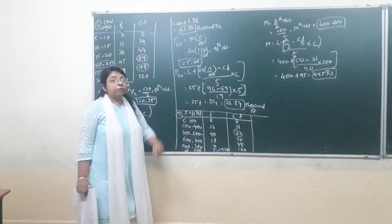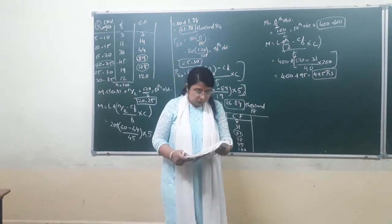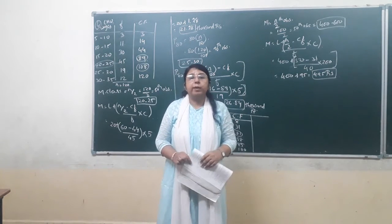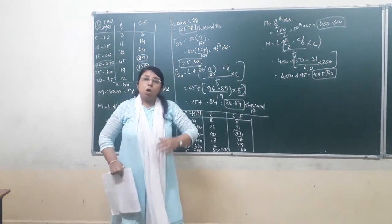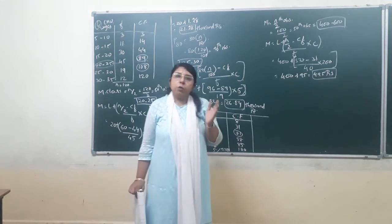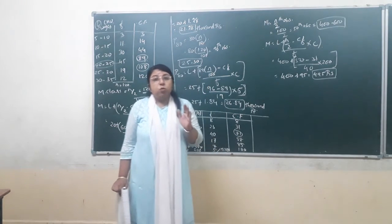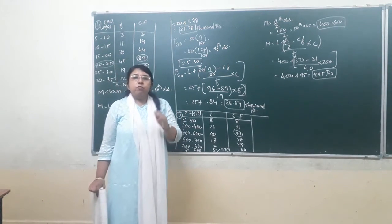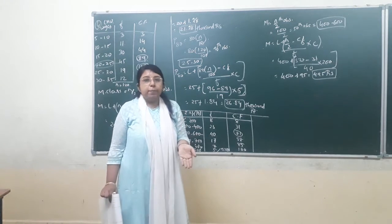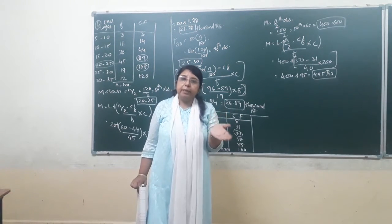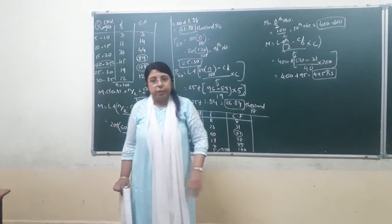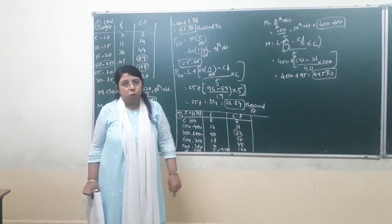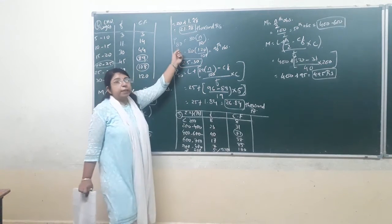The next value we have to find is the percentile. The question asks to find the lower limit for the richest 20% of employees. So we have to find P80, not P20. Because we need the lower limit of the richest 20%, meaning 80% of employees fall below that value — so we find P80.